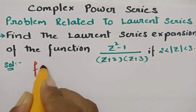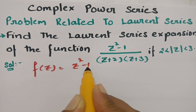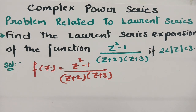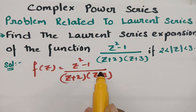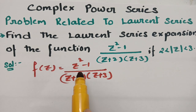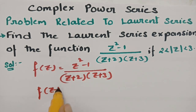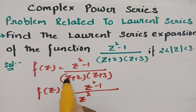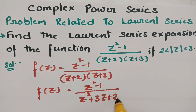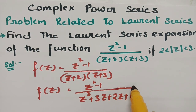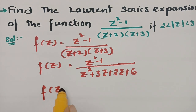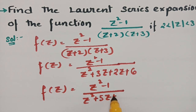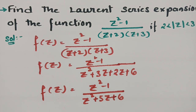The function is given as f(z) = (z² - 1) / [(z + 2)(z + 3)]. Clearly, the numerator has degree z² and the denominator also has degree z², so we have equal degree. Therefore we have to divide before resolving into partial fractions. If we multiply the denominator, this will be z² + 3z + 2z + 6, giving us z² + 5z + 6. So f(z) = (z² - 1) / (z² + 5z + 6).